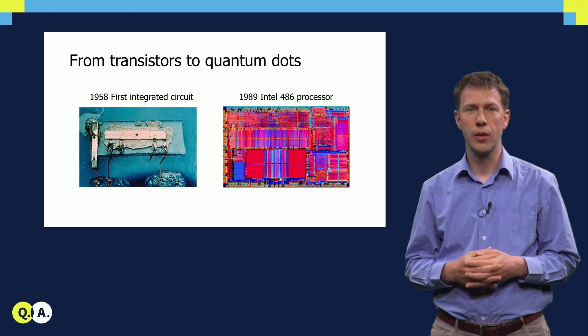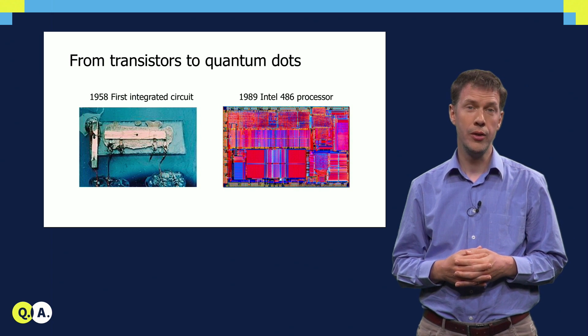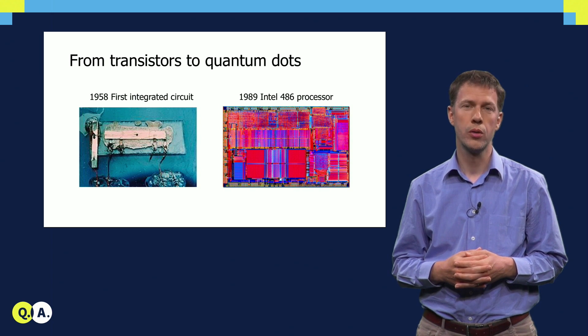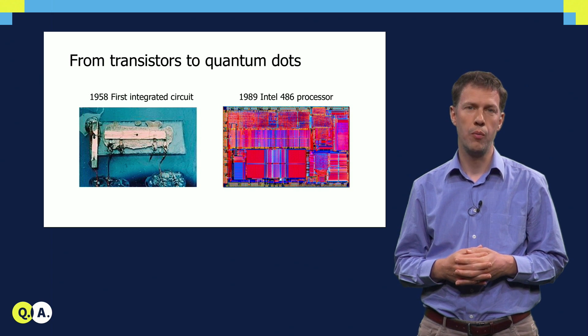So a second momentous step was in 1958, the first demonstration of an integrated circuit, where all the relevant components were integrated monolithically in the same piece of germanium or silicon.